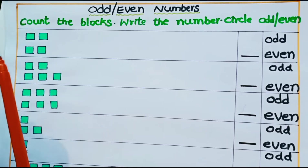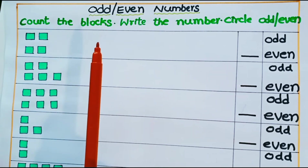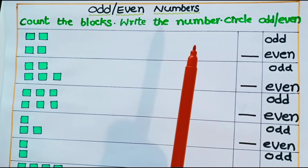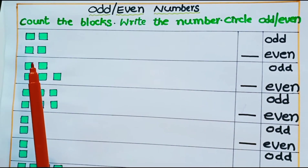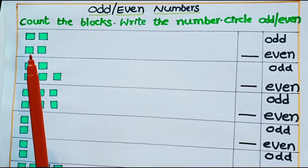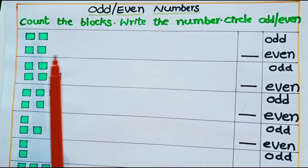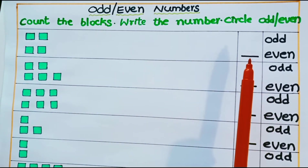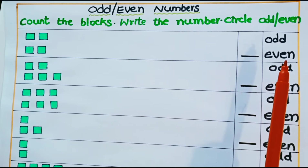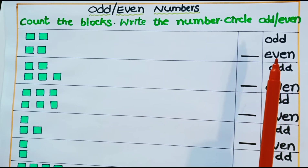Read the question: count the blocks and write the number, then circle whether it is an odd or even number. We have to count the number of blocks present in each row, write the number, and circle whether it is odd or even.